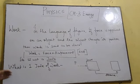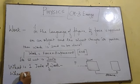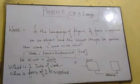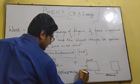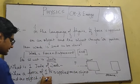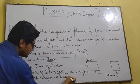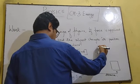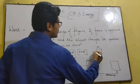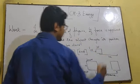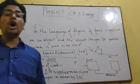What is 1 Joule of work? When a force of 1 Newton is applied to an object and the object changes its position by 1 meter, then 1 Joule of work is done.